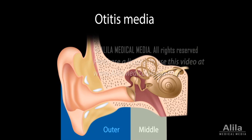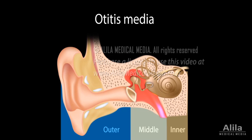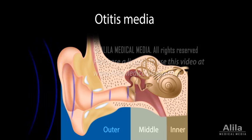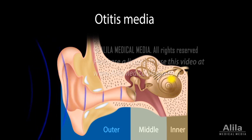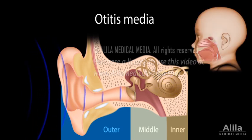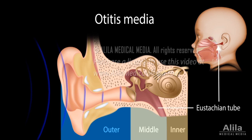Otitis media is inflammation or infection of the middle ear. The middle ear is the cavity between the tympanic membrane, the eardrum, and the oval window of the inner ear. Its function is to amplify sound vibrations of the eardrum and transmit them to the inner ear. The middle ear is linked to the upper throat by the auditory tube or eustachian tube, which helps equalize air pressures between the middle ear and the outside atmosphere. It also drains mucus secretions from the middle ear into the throat.